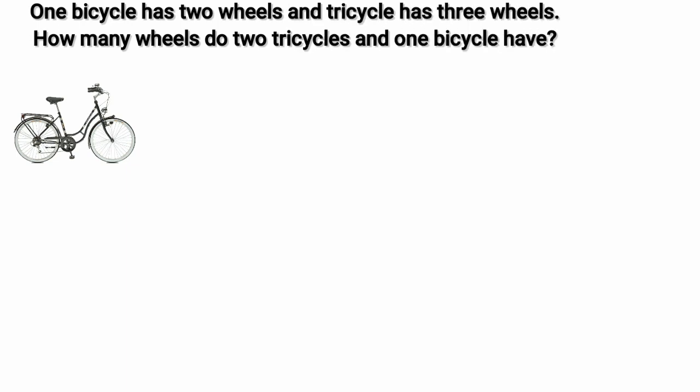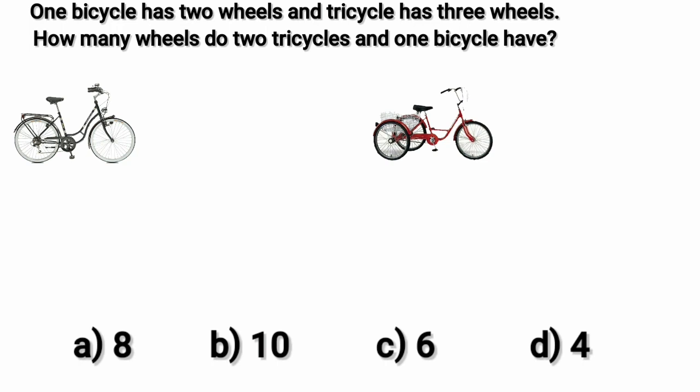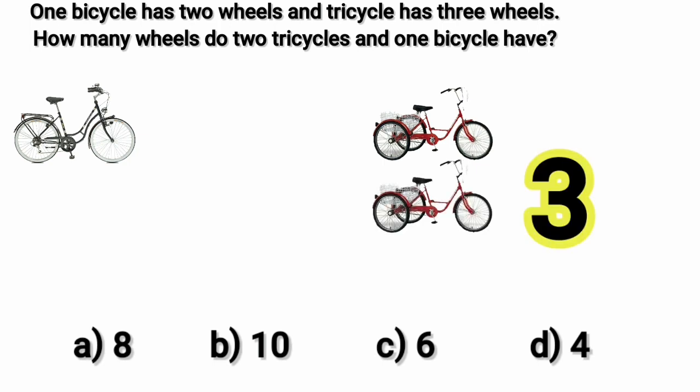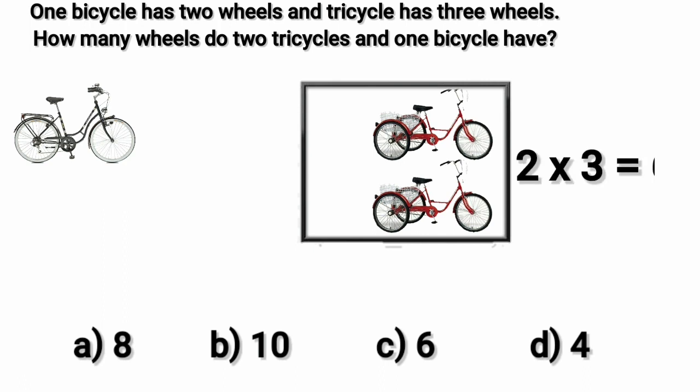Kids, how many wheels are there in one tricycle? Yes, there are three wheels in a tricycle. One threes are three. Second tricycle also has three wheels.